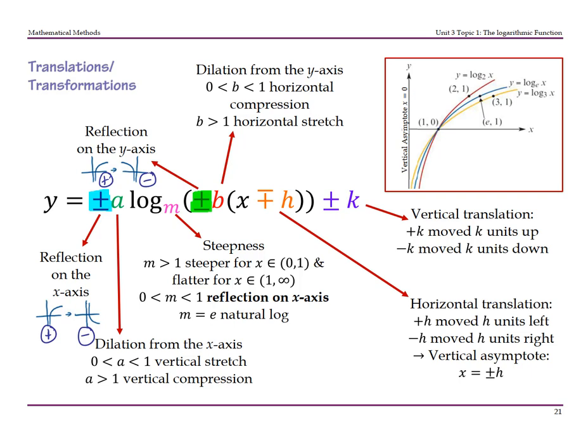For horizontal and vertical translations: plus h means moving to the left h units, minus h means moving to the right h units. Plus k means moving up, minus k means moving down. The vertical asymptote is given by the horizontal translation — that plus or minus h. So if you're moving to the right h units, the asymptote moves to x equals h. If moving to the left h units, the asymptote moves to x equals negative h.